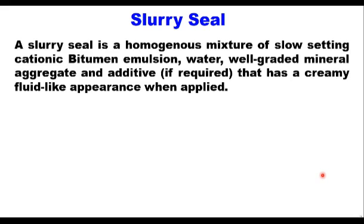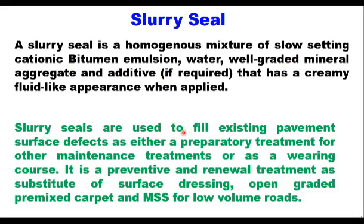The slurry seal is a homogenous mixture of slow setting cationic bitumen emulsion, water, well-graded mineral aggregates and additive that has a creamy fluid-like appearance when applied. Slurry seals are used to fill existing pavement surface defects as either a preparatory treatment for other maintenance treatments or as a wearing course. It is a preventive and renewal treatment as a substitute of surface dressing, open-graded premixed carpets and mixed seal surfacing for low-volume roads.